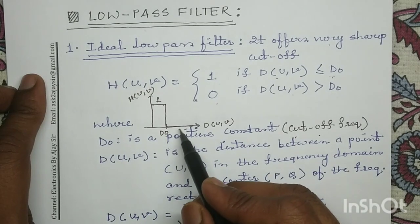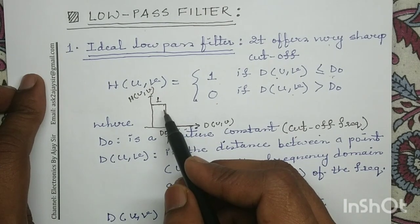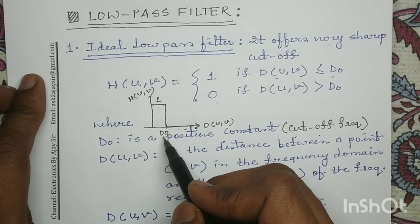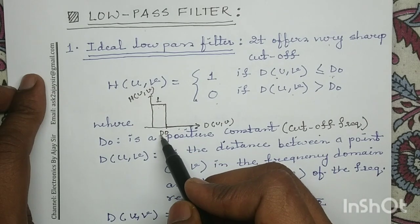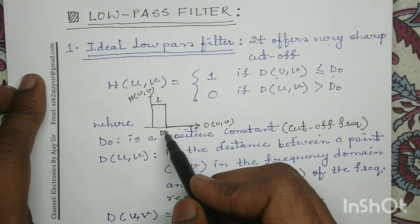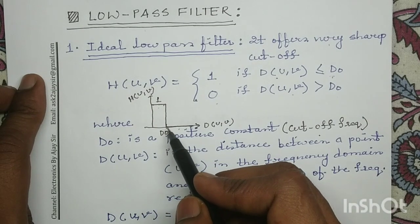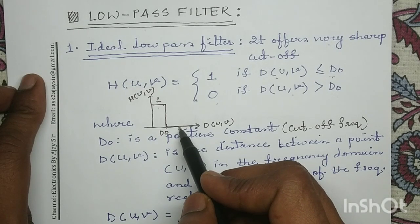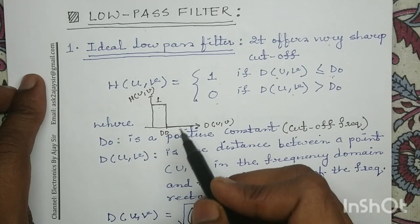So the ideal low pass filter offers a filter coefficient of 1 when D(u,v) is less than or equal to D₀, and a filter coefficient of 0 when D(u,v) is greater than D₀.